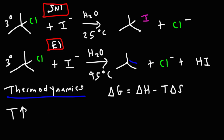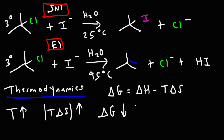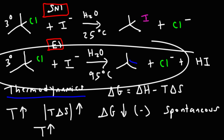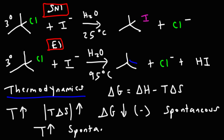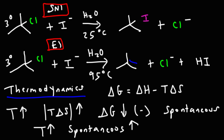As we increase the temperature, it's going to enhance the entropy effect because the term T delta S will increase as well. The absolute value of T delta S increases as temperature increases. Now we do have a negative sign in front of that term, so as this increases, it causes delta G to decrease or become more negative. A negative delta G value indicates a spontaneous reaction. So an increase in temperature causes the E1 reaction to become more spontaneous and more energetically favorable, shifting the position of equilibrium to the right.